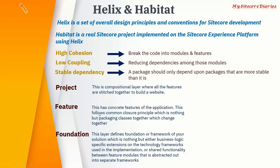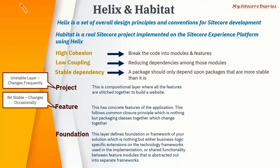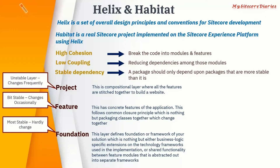Regarding the stable dependency principle, stability is about how frequently your code changes. The Project layer is the most unstable because content editors can change things like a hero banner frequently. The Feature layer changes occasionally — only when functionality changes. The Foundation layer is the most stable; a framework generally doesn't change once created. So Foundation can be referenced by both Feature and Project, and Feature can be referenced by Project.